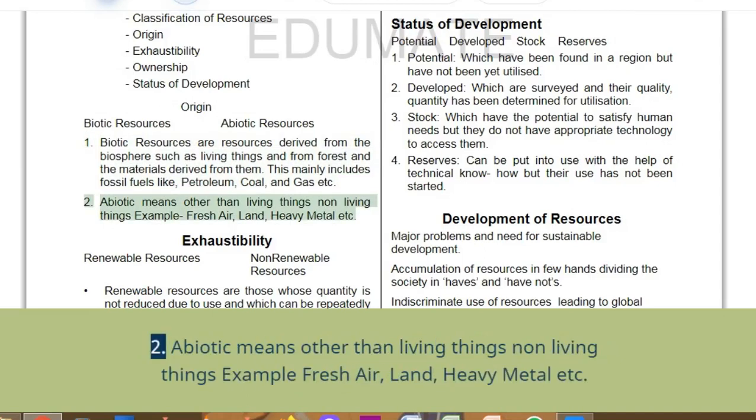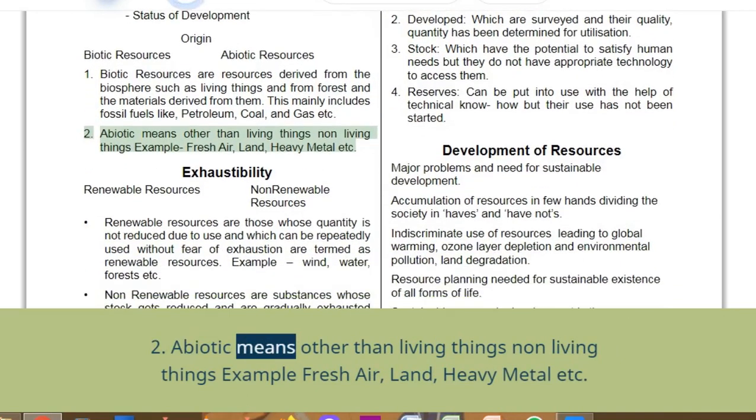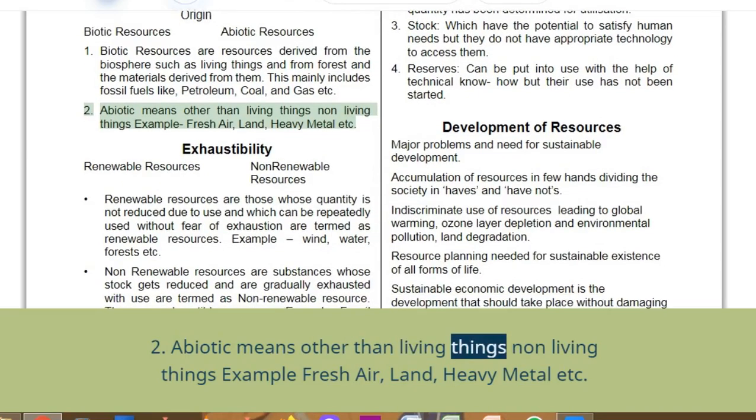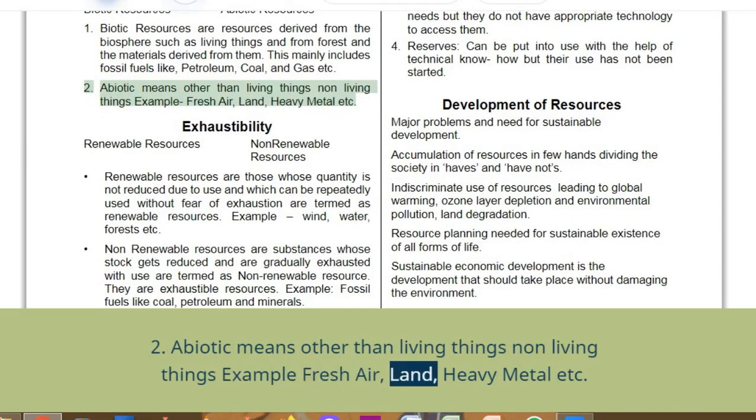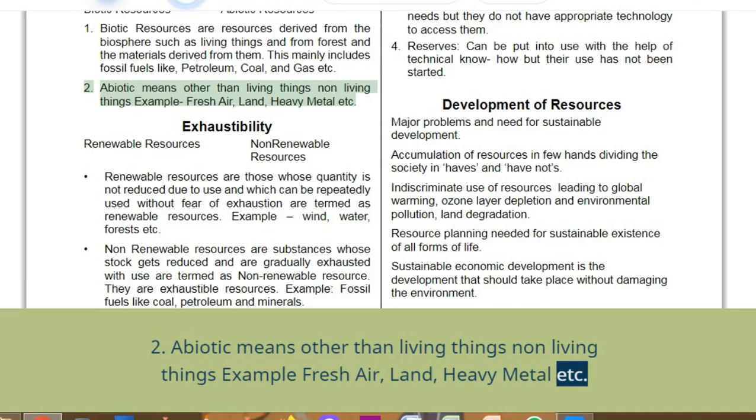Abiotic means non-living things, other than living things. Examples: fresh air, land, heavy metals, etc.